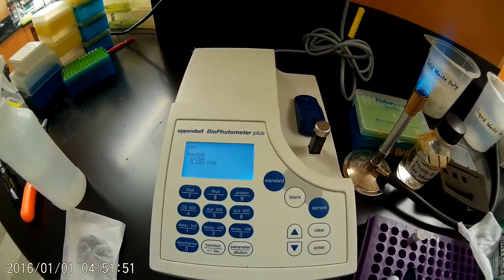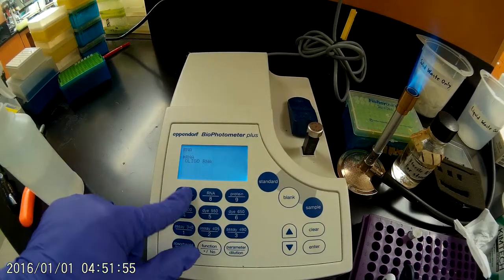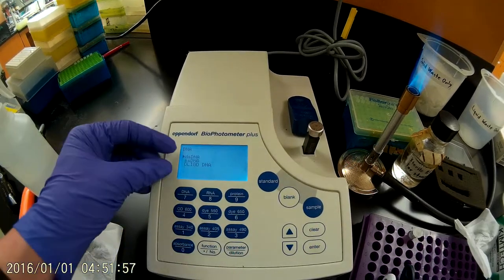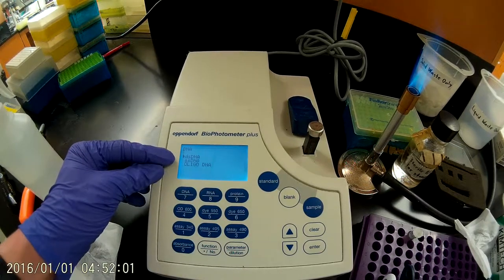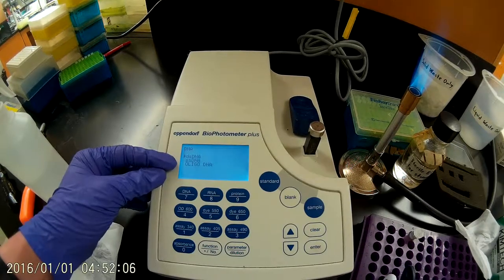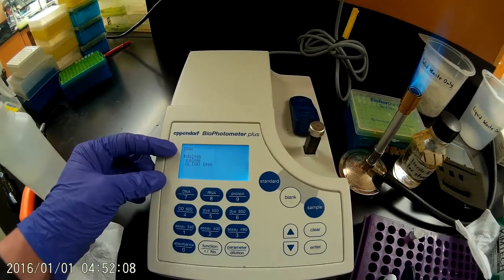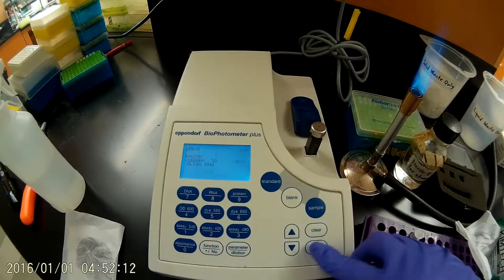And the biophotometer looks like it's already on the DNA setting. If it wasn't, you could just press DNA to get back to that. We have three different settings here: DS-DNA for double-stranded DNA, SS-DNA for single-stranded DNA, and oligo-DNA for small oligonucleotides. So we're measuring a plasmid sample today, so we want to select the double-stranded DNA option. We'll press Enter to do that.